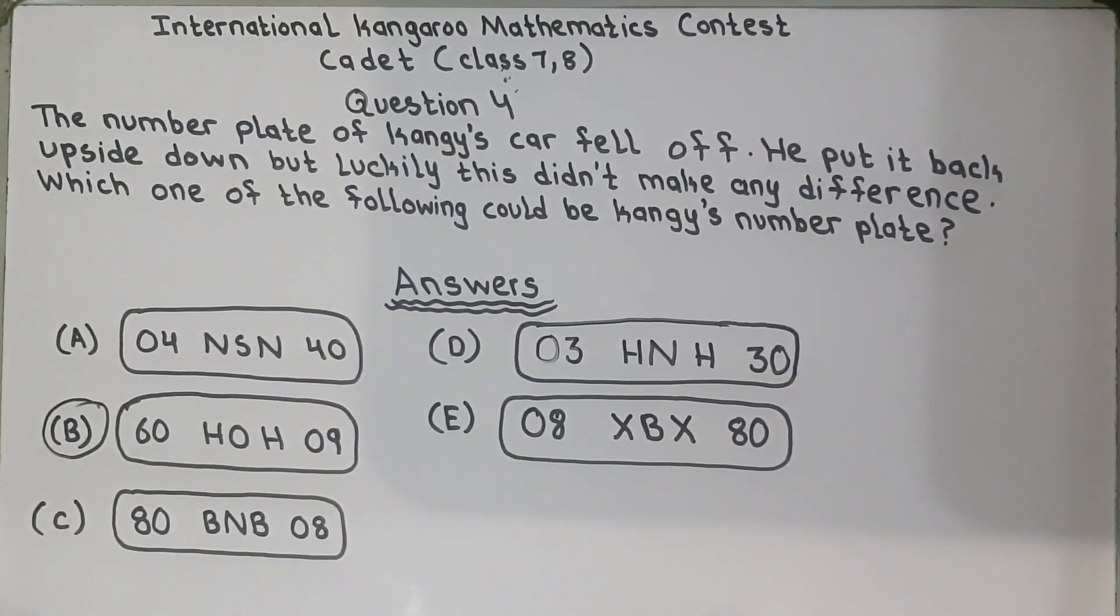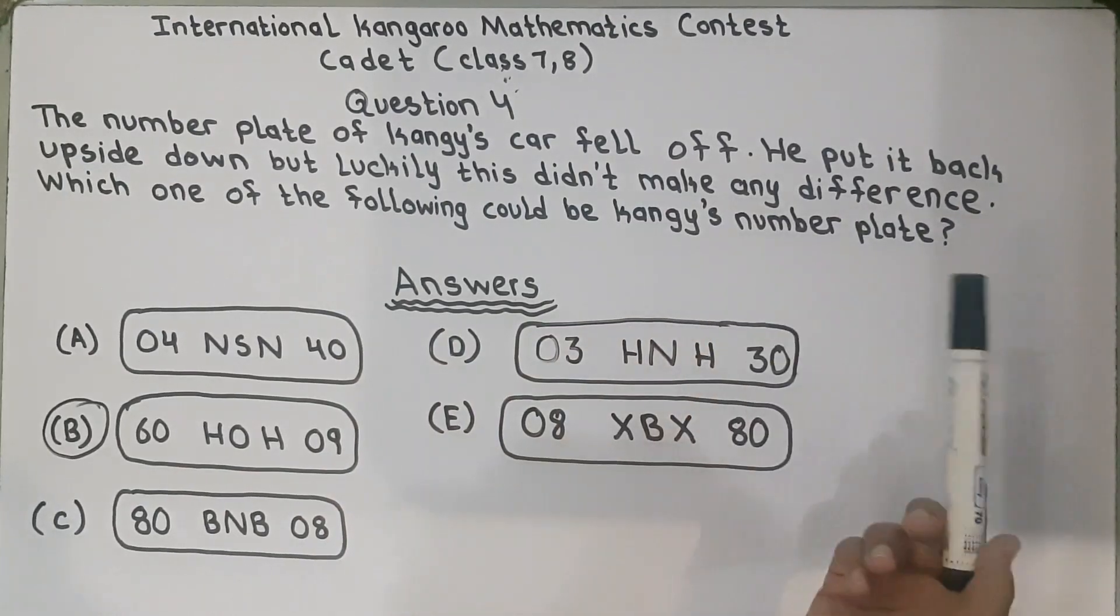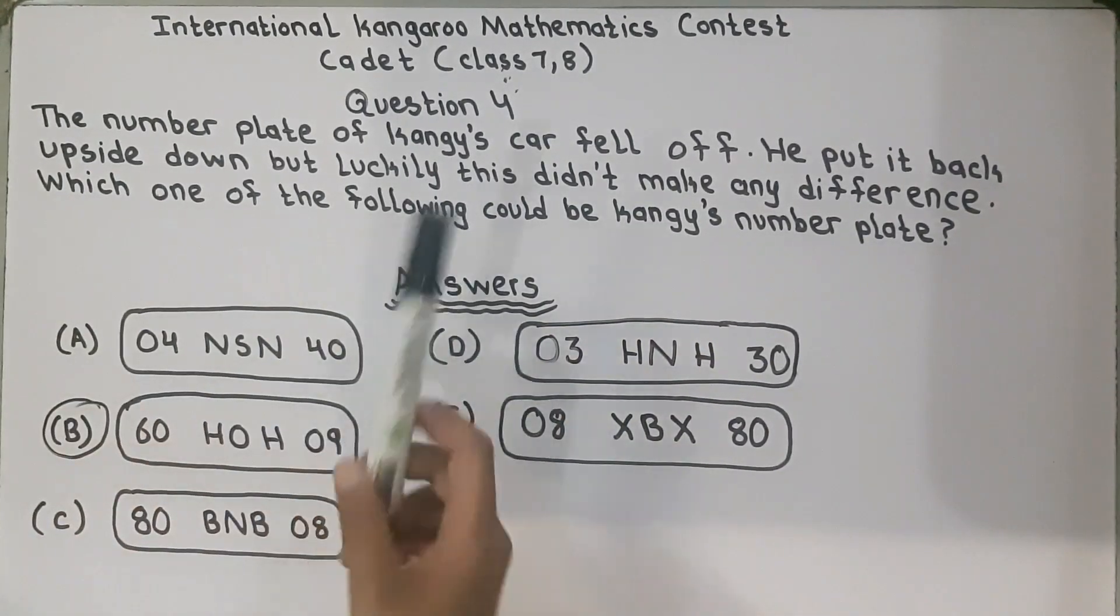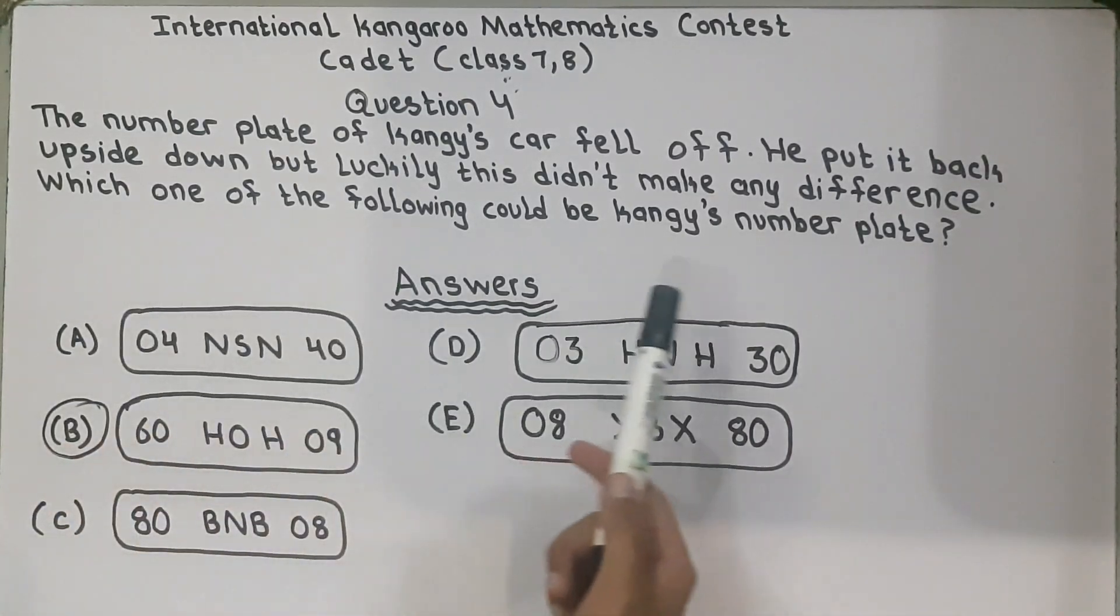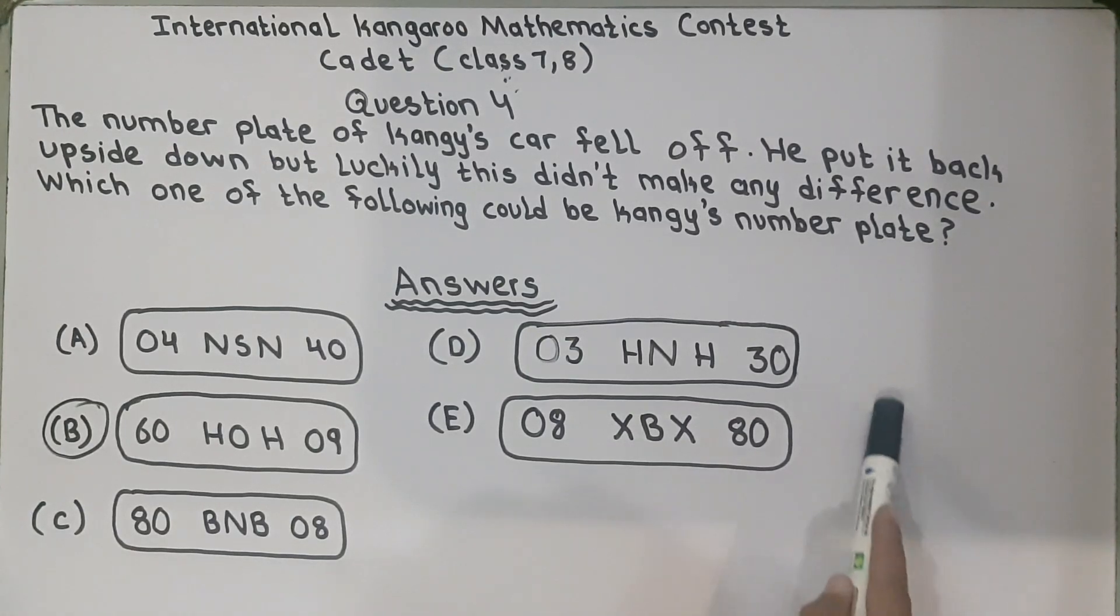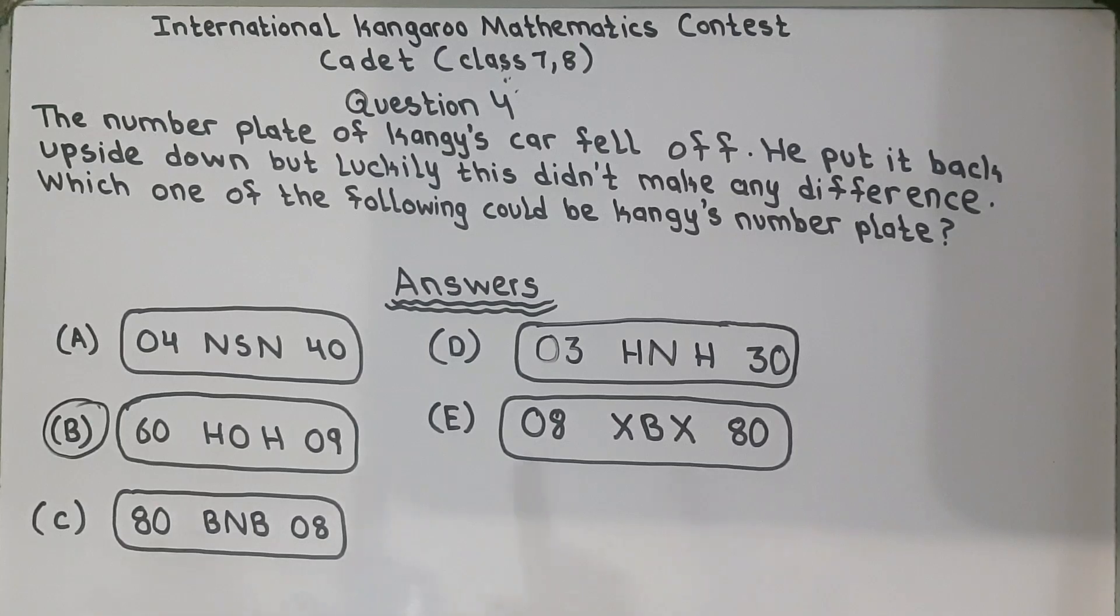Question number 4. The number plate of Kangaroo's car fell off. He put it back upside down but luckily this didn't make any change or difference. Which one of the following could be Kangaroo's number plate? Now they have given us five number plates. In the question they have said he put it upside down but this didn't make any change. So we have to rotate the number plate and see which one is Kangaroo's number plate.